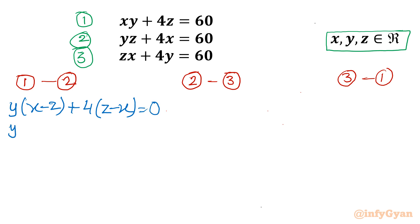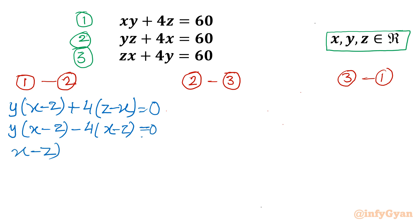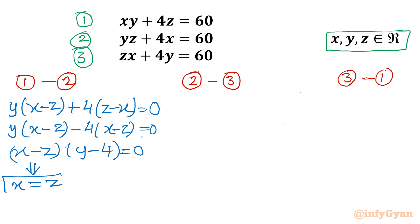I can factor this as: x minus z is overall common, giving the factor y minus 4 in the bracket, equal to 0. So from this we conclude either x equals z, or from the second bracket y equals 4.